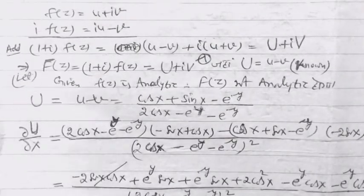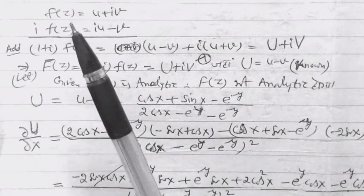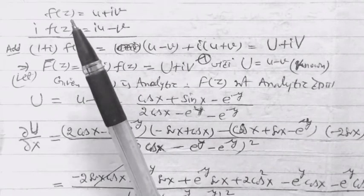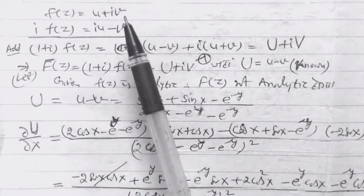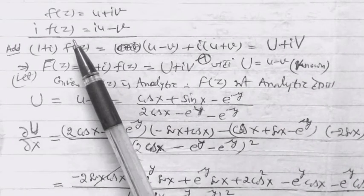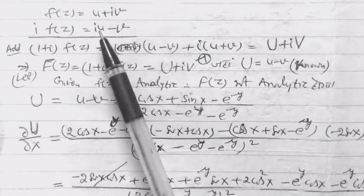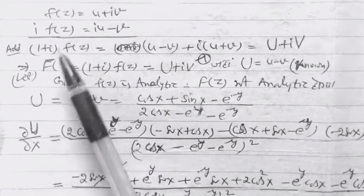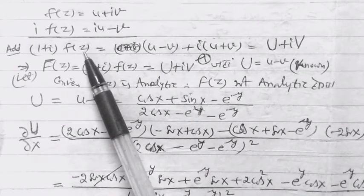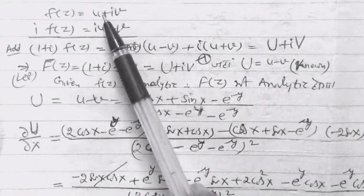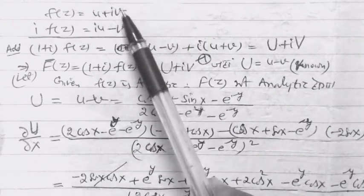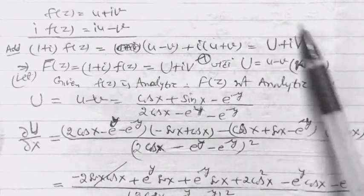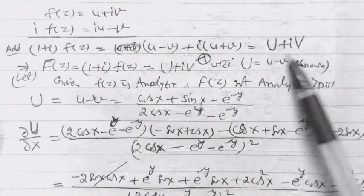अब हम इस question का solution निकालते हैं। इसके लिए हम Milne's method use करेंगे। हम जानते हैं कि f(z) = u + iv, और iota से गुणा करने पर iota·u + iota²v = iota·u - v आता है। इन दोनों को add करने पर (1 + iota)·f(z) = (u - v) + iota(u + v) आता है। इसको नाम दिया हमने capital U + iota capital V।